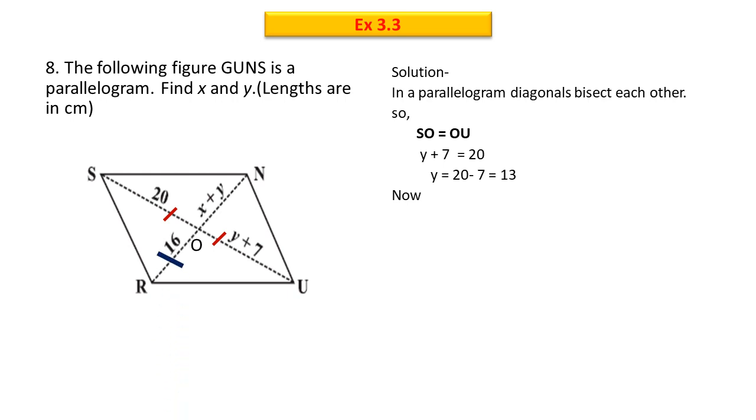Now let we take the second pair, this is OR and ON. Values put kari to x plus y equal to 16 aaya. Y ki value already hum nikal chuke hain 13, to isko yahan put karenge. Upon solving we will get x equals to 3. So hence x ki value hai 3 cm, y ki value hai 13 cm.